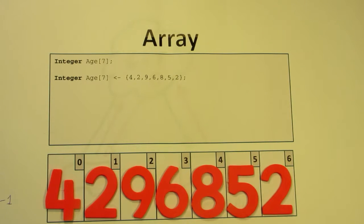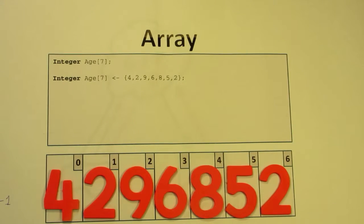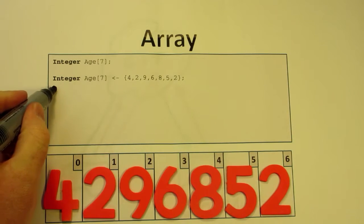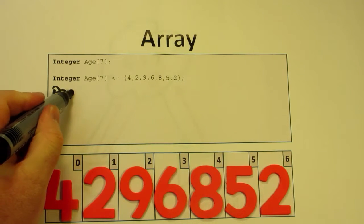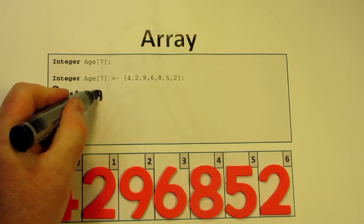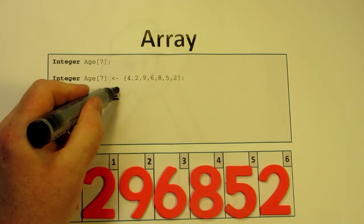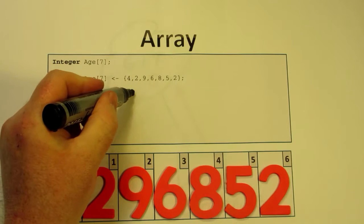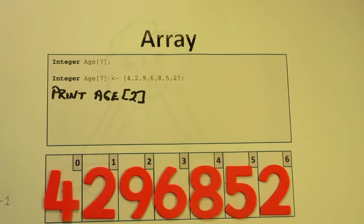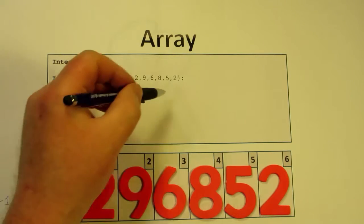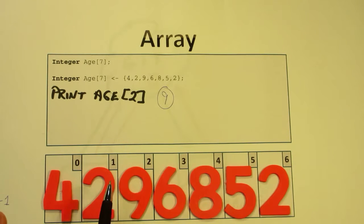Once we've got an array like this, we can do all the sorts of things we would do typically with any other kind of variable. If I said print Age[2], it will print out what's number two in the list. Index value two is nine, so it will print out the number nine. That won't print out the second value in the list; that will print out the one numbered as two.